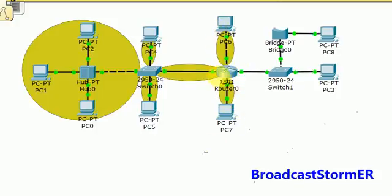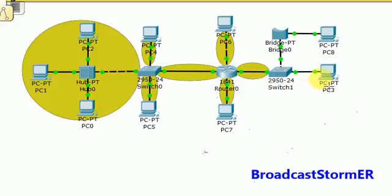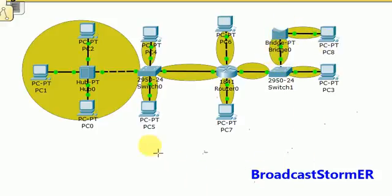This right here is another collision domain. One router connects to another switch, so that must be another collision domain. Each interface on a switch is its own collision domain, so that's another collision domain. For a bridge, each interface port is its own collision domain — same as a switch — so that's another collision domain and that's another collision domain. In total, we have ten collision domains for this network. If you count the circles, there are a total of ten collision domains. Thanks for watching.